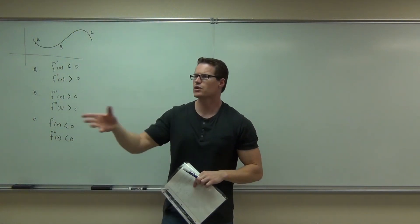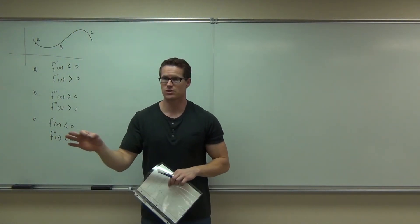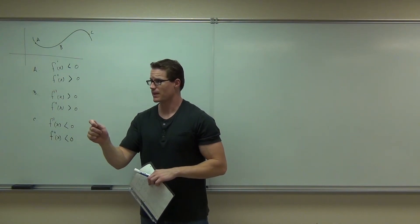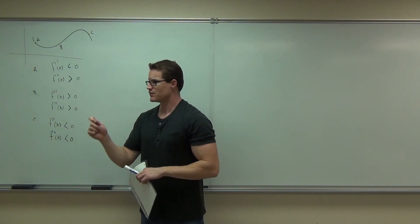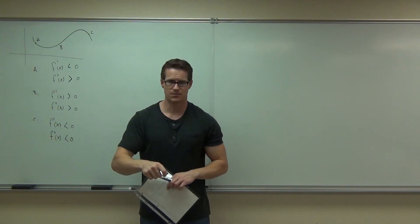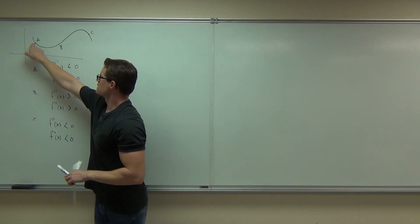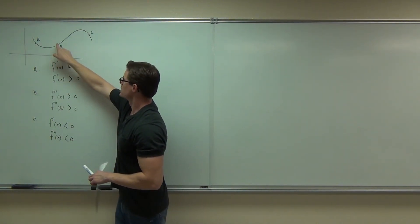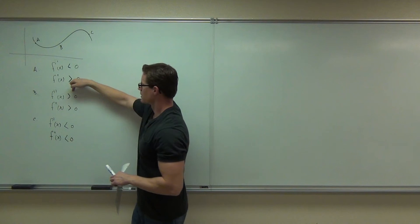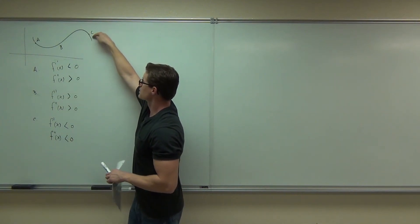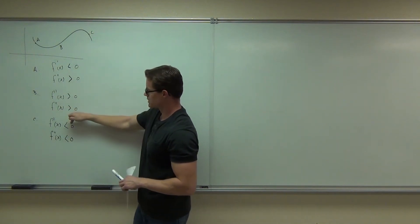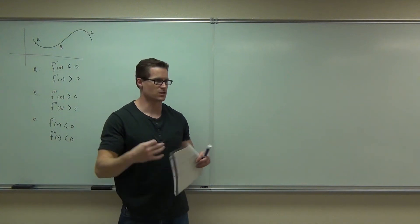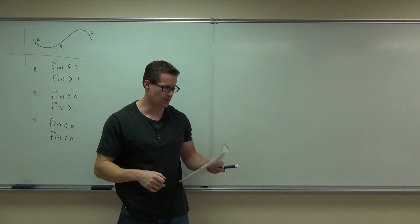How many people got both of those right? If not — was it the first derivative or second derivative? First derivative is increasing or decreasing. Second derivative is concavity. Decreasing, concave up. Decreasing, concave up. Increasing, concave up. Increasing, concave up. Decreasing, concave down. Decreasing, concave down. That's the same exact language and same exact idea that we just talked about.